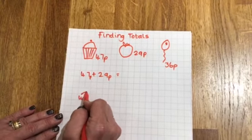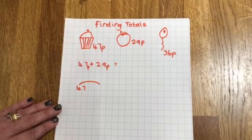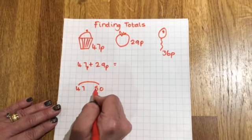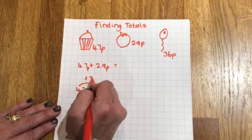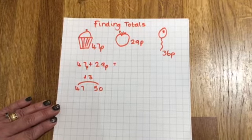My first jump is going to take me from 47 up to the next number ending in zero which is 50. So to get from 47 to 50 I've got to add on 3. So I've used 3 of my 29. It means I've got 26 left.